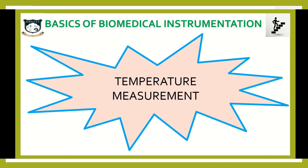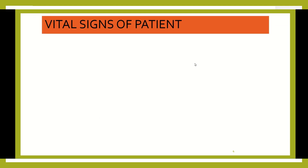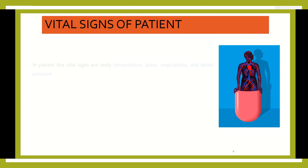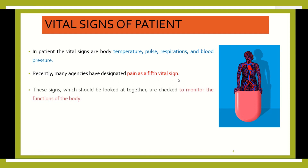Welcome to my channel Dazzling Stepping Stone. Today let's discuss temperature measurements. The contents are: what are the vital signs of a patient, what is systematic temperature measurement, what is a thermometer, thermocouple, thermistor, what is skin temperature measurement, and infrared thermometer. First, let us discuss the vital signs of a patient. When we go to a hospital, the clinician will check temperature, pressure, pulse rate, and breathing rate — that is respiration. These four parameters are considered vital signs, and pain is considered the fifth sign of a patient.